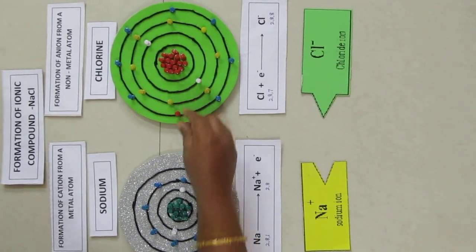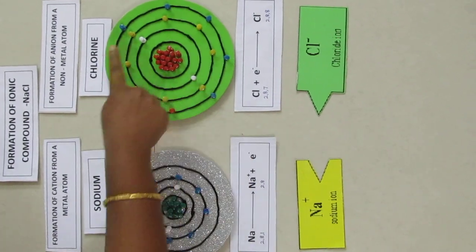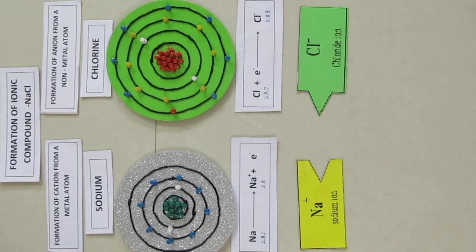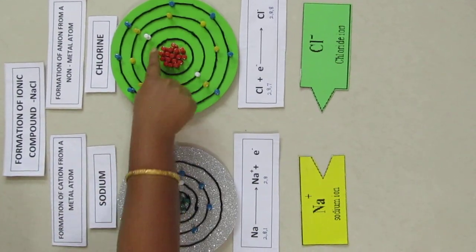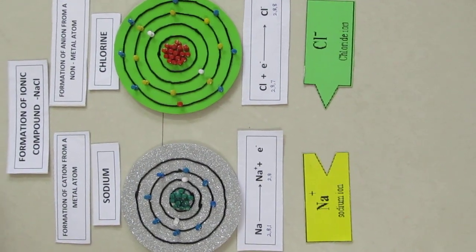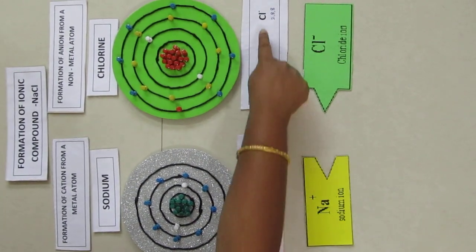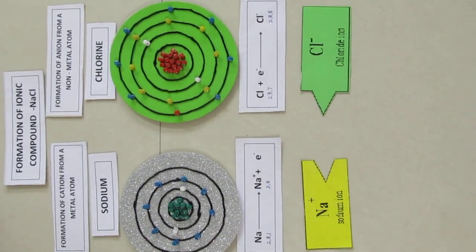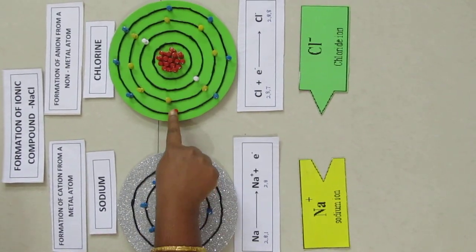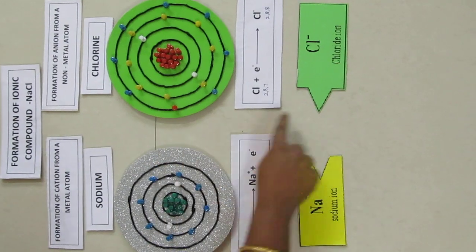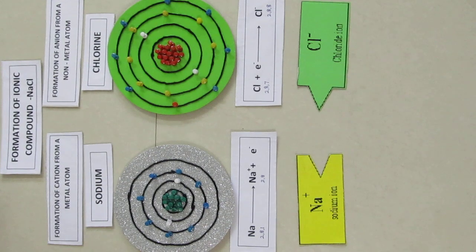then its M shell has 8 electrons and it attains stable octet configuration. After gaining 1 electron, now the nucleus of chlorine has 17 protons, but the number of electrons has become 18. So there is a net negative charge on chlorine giving chloride anion. As chlorine gains 1 electron, its valency, that is combining capacity, has become 1.